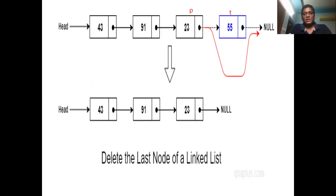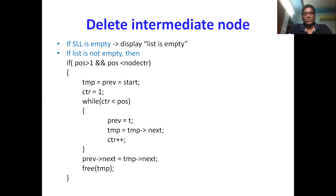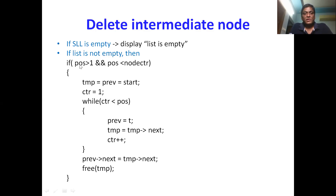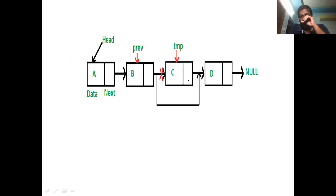The third deletion operation is deletion of an intermediate node — deleting any node other than the first and last. Again, if the singly linked list is empty, display 'list is empty'. If there is only one element, you cannot delete an intermediate node. We take the position of the element to delete — it must be greater than one and less than the total number of elements.